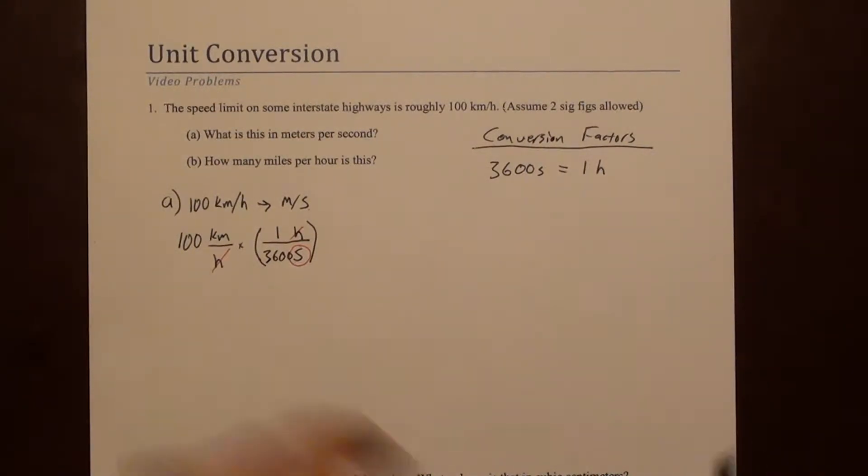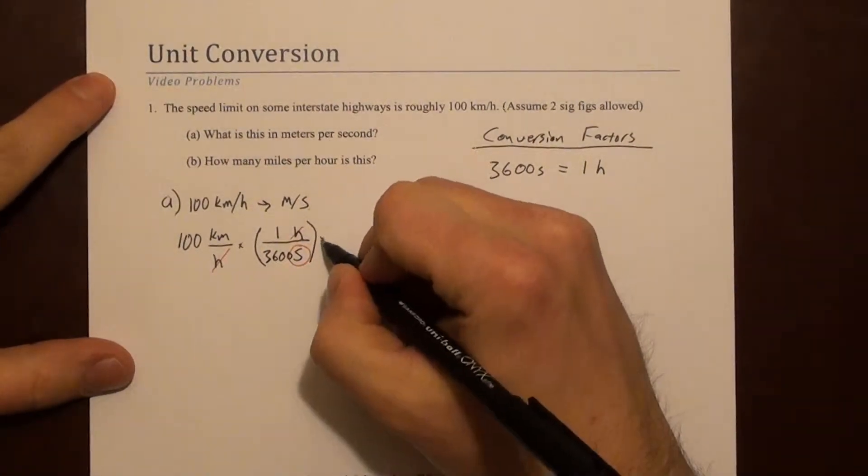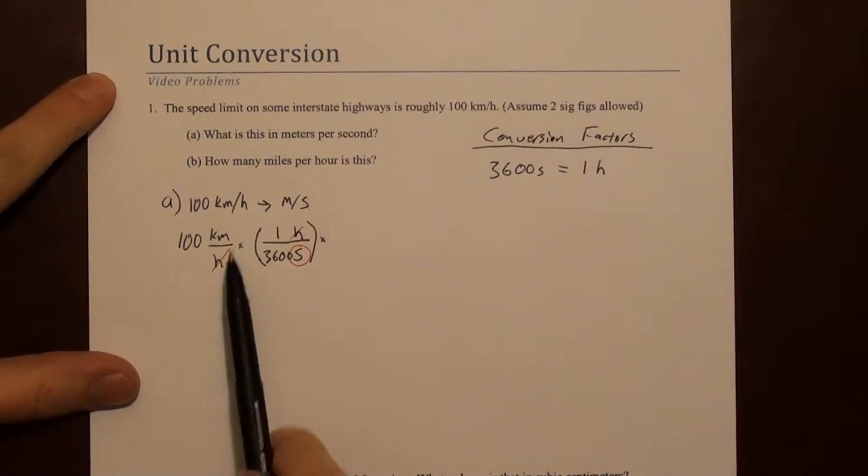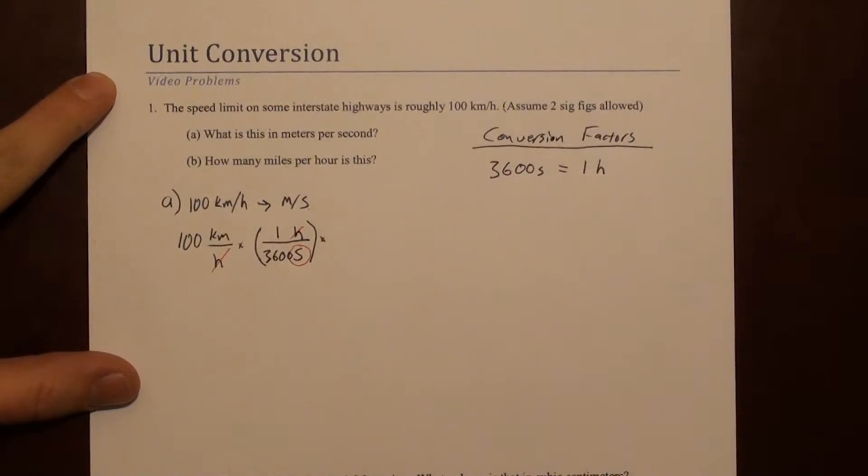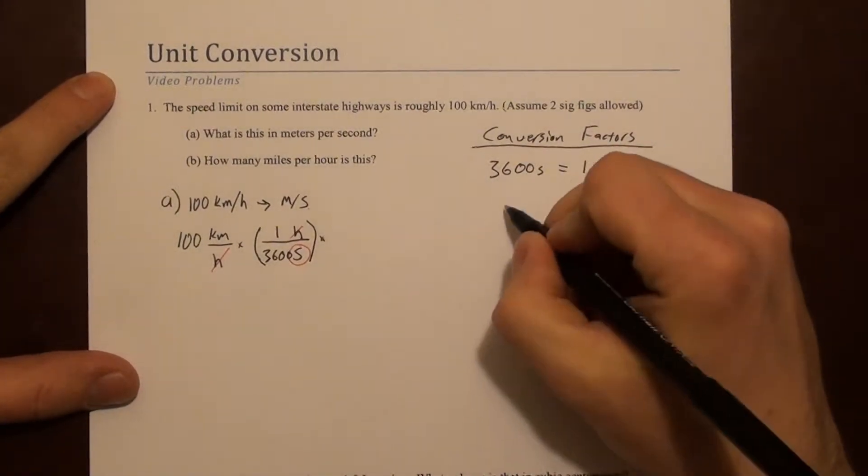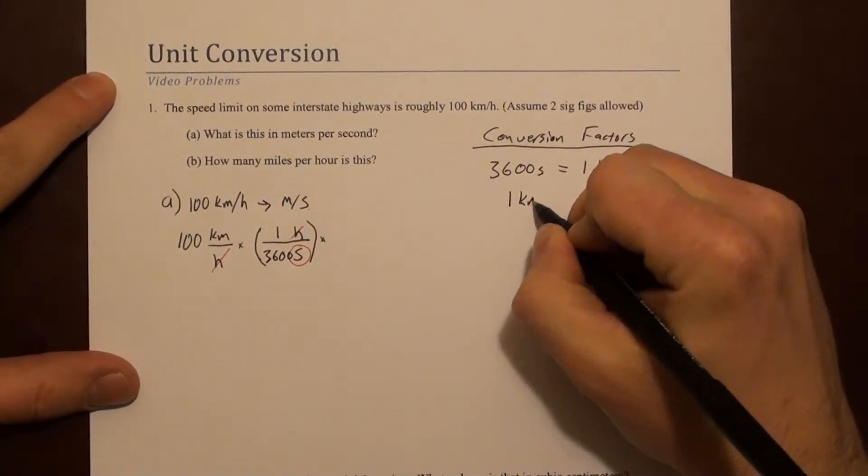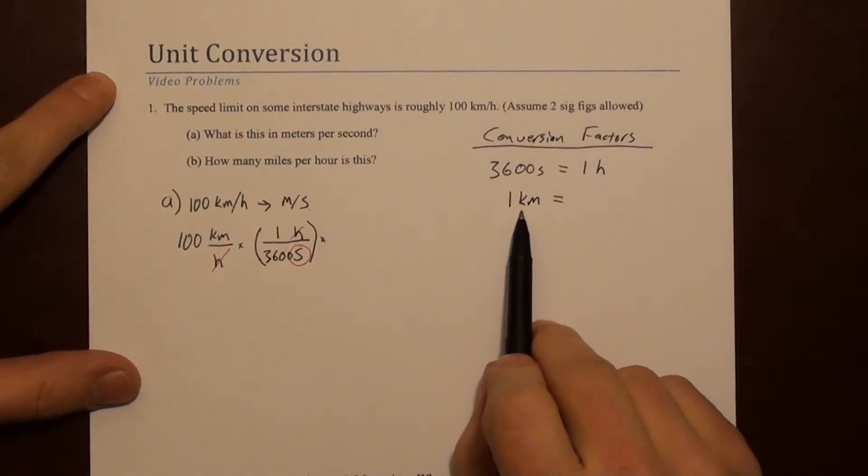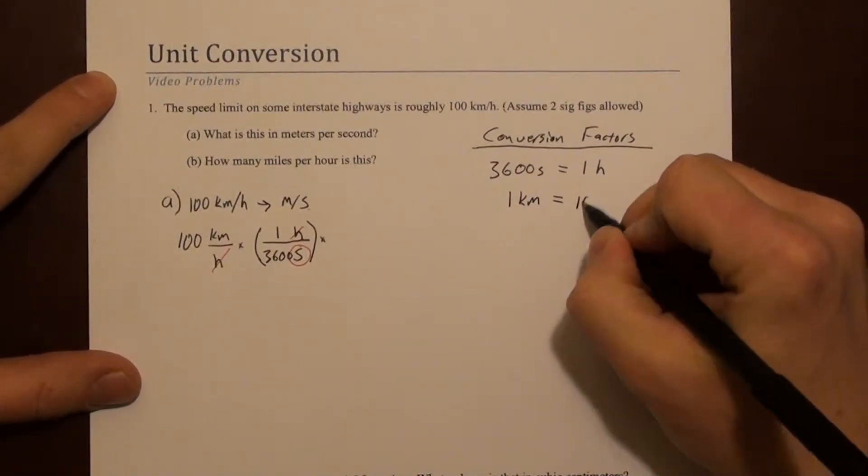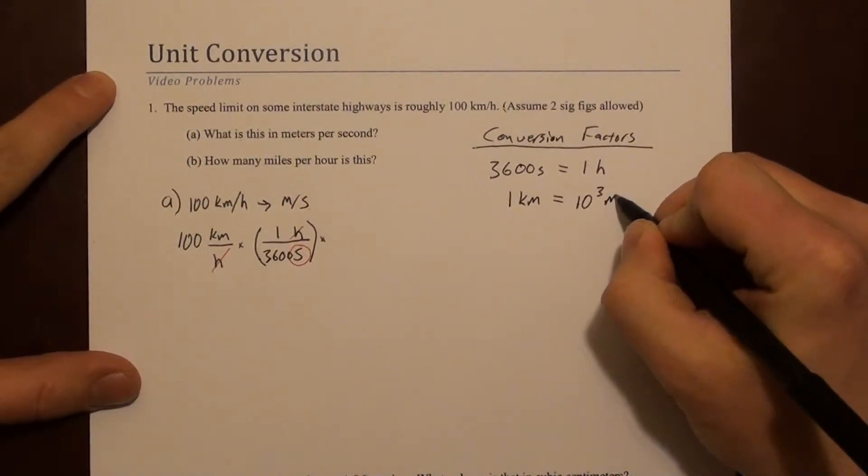Now let's turn our attention to the distance. We want to convert from kilometers to meters. So we'll come up with another conversion factor. Maybe we remember that one kilometer - and remember that kilo means 10 to the 3 - so we can just say 10 to the 3 meters.